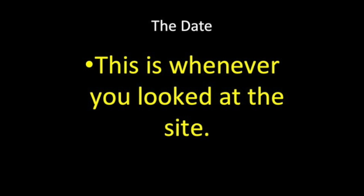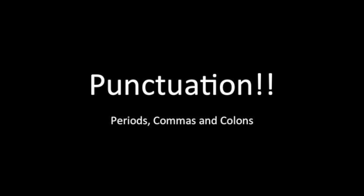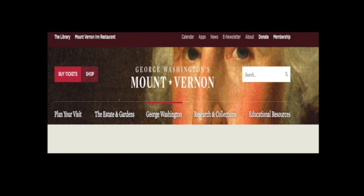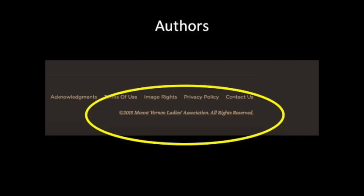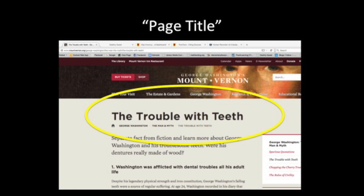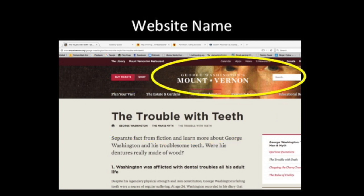Finally, you end the citation with the date you looked at the website. If that is today, you write today's date. Now here's the example. You are going to notice that I am now putting in that punctuation. It is from a site called George Washington's Mount Vernon. A group called the Mount Vernon Ladies' Association published it — I knew this because I looked for the copyright symbol. The largest text is 'The Trouble with Teeth.' I am guessing this is the name of the page because the site's name is George Washington's Mount Vernon.